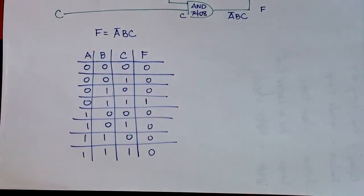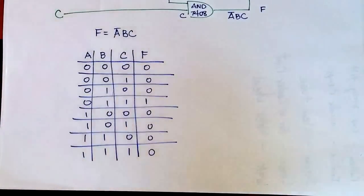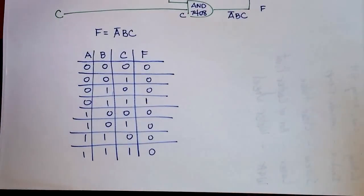That's our first example of how to take a logic circuit all the way to an expression and a truth table — we have all three in combination now.